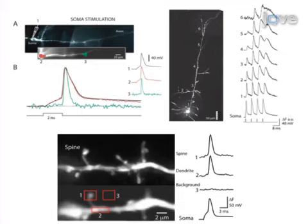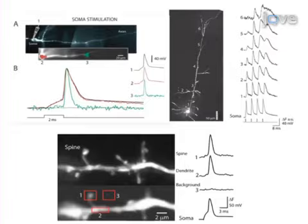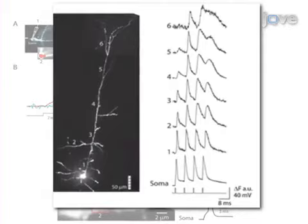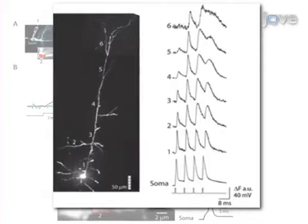Results show the unique capability of this approach to obtain information on electrical signal integration by individual nerve cells, by monitoring membrane potential signals from axons, dendrites, and dendritic spines.